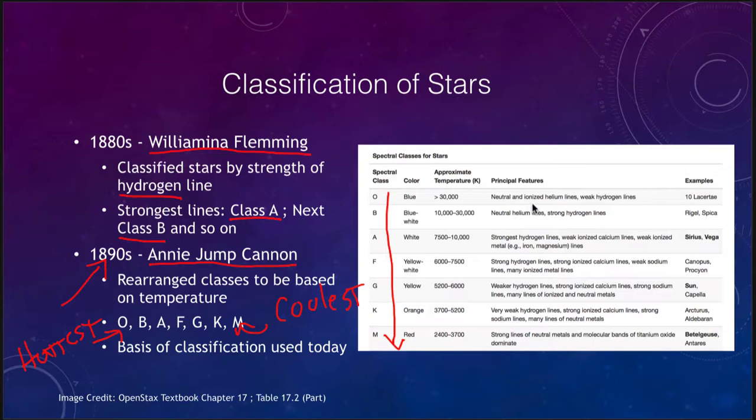This table tells you what you would see in each of those classifications: helium lines very strong in the hot stars, hydrogen in the intermediate stars, metals like calcium and sodium in the intermediate and slightly cooler stars, and then molecules beginning to appear in the very coolest stars.